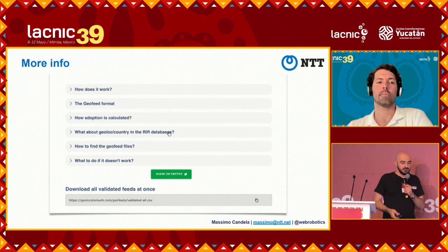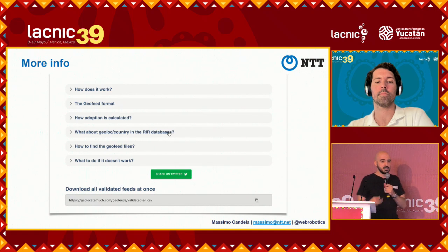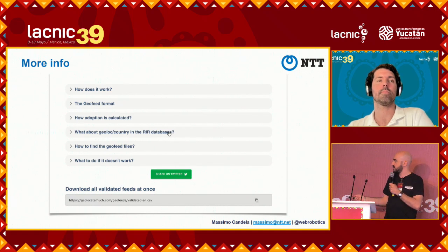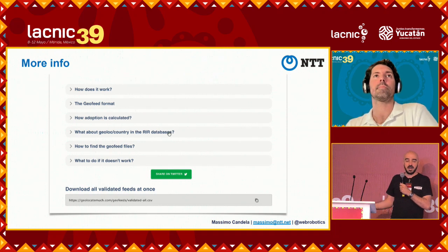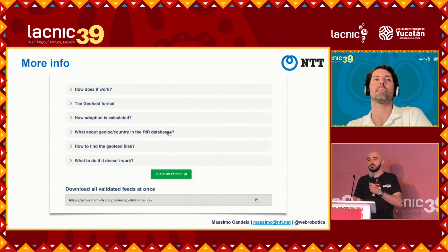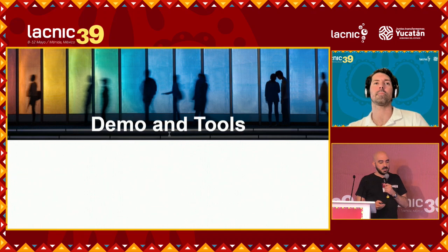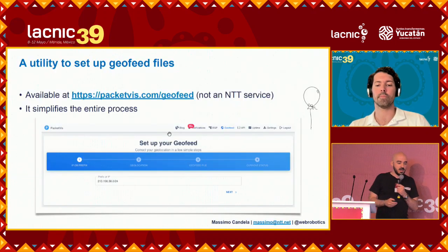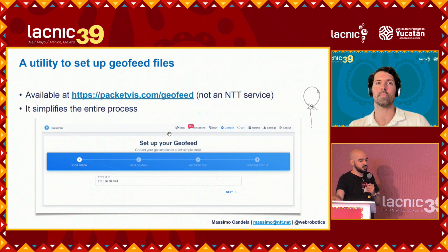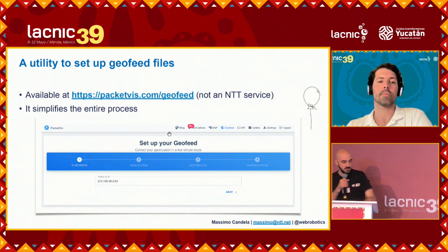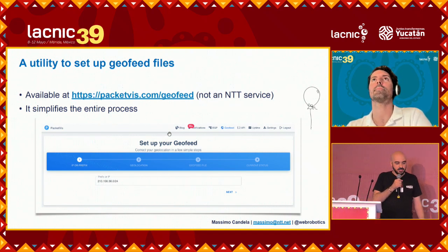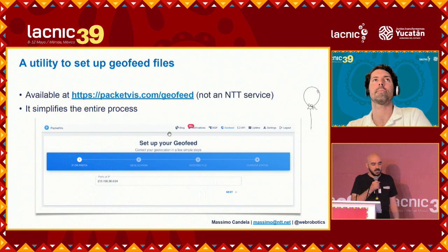You can find more information on that page, including a link to the complete geofeed file with all five RIR geolocation data already validated. For the demo and tools section, I created a utility for geofeed files available at packetvis.com/geofeed — or go to packetvis.com and click the 'GeoFeed' button at the top.